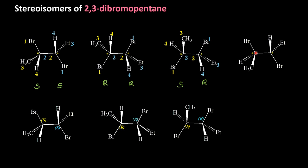For the fourth molecule with the CIP rule, the fourth group is away from the observer, so we retain the configuration. Moving from 1 to 2, 2 to 3 is clockwise, so the configuration is R. On the other carbon, the fourth group is towards the observer, so we must reverse. Moving from 1 to 2, 2 to 3 is clockwise — that gives R, but we write it as S.